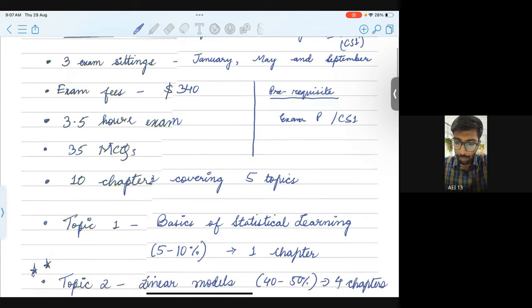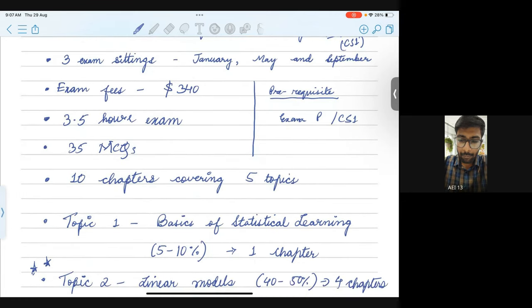Okay, what else? So here, the number of settings is more than what we have in IFOA and IEI. It's three settings per year. It's fixed January, then you have one in May and then one in September. So between every exam, you can see there are three full months available.